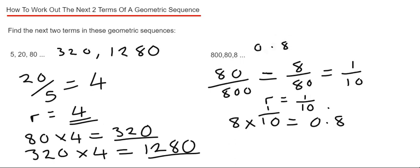And our fifth number, we just need to now multiply that by 1 tenth again. So that will give us 0.08, and that's our fifth term.